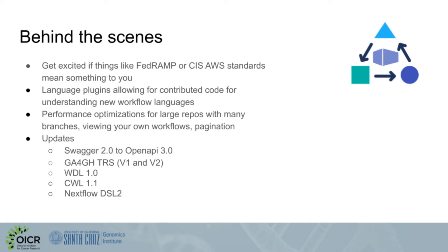Behind the scenes, you can get excited if things like FedRAMP or CIS AWS standards mean something to you. We've also added language plugins, allowing for new workflow languages to contribute code for us to help understand new workflow languages. In part, this is how we managed to add Galaxy support to DocStore. We have a lot of performance optimizations in the background for things like large repos with many branches, for viewing your own workflows or paging through workflows.